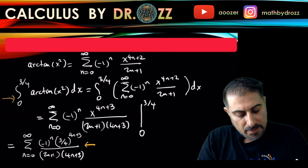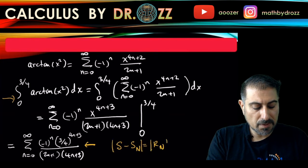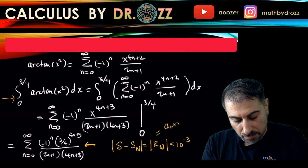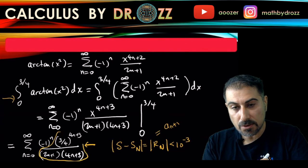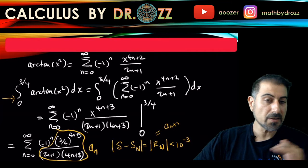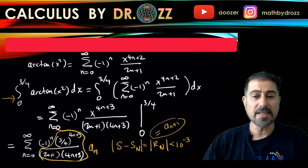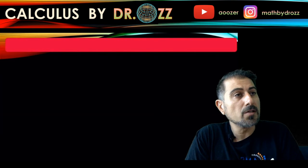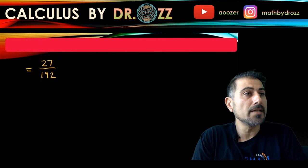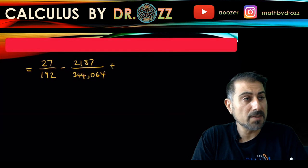The alternating series remainder theorem states that |S − Sₙ| = |Rₙ| ≤ aₙ₊₁. We want this error to be less than 10⁻³. Here Rₙ ≤ aₙ₊₁, where aₙ is the whole chunk (−1)ⁿ (3/4)^(4n+3) / [(2n+1)(4n+3)]. So the first term past our cutoff, aₙ₊₁, tells us the error. You can list a few terms — you can pause the video and check.